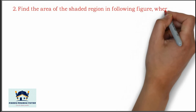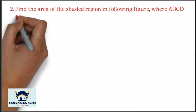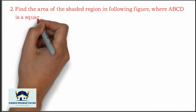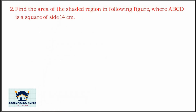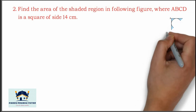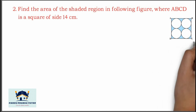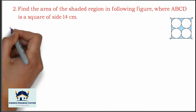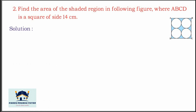Now we will take the second question. Find the area of the shaded region in the following figure, where ABCD is a square of side 14 centimeters with 4 circles inside it. Solution: